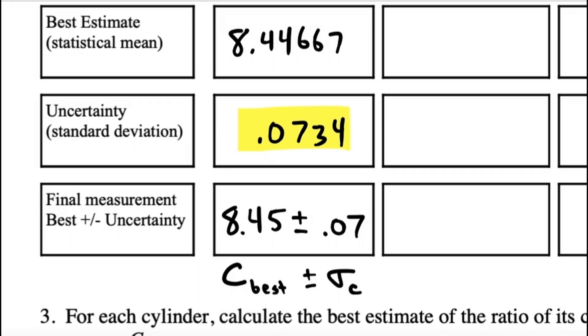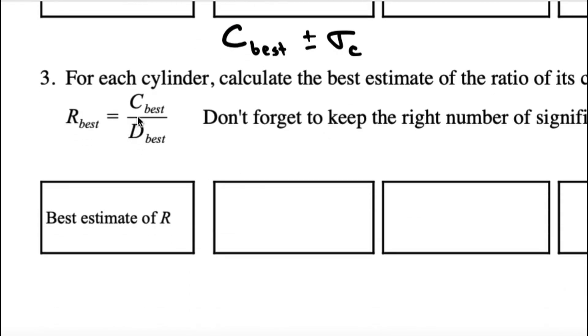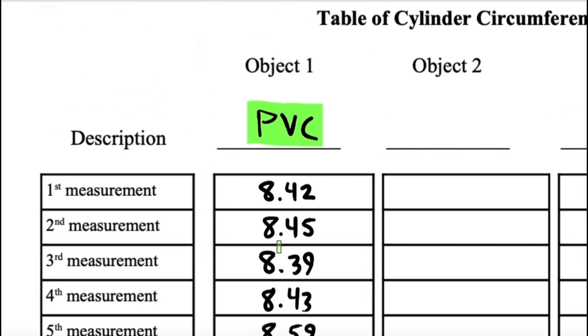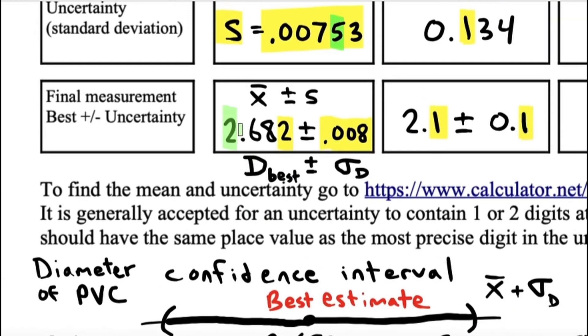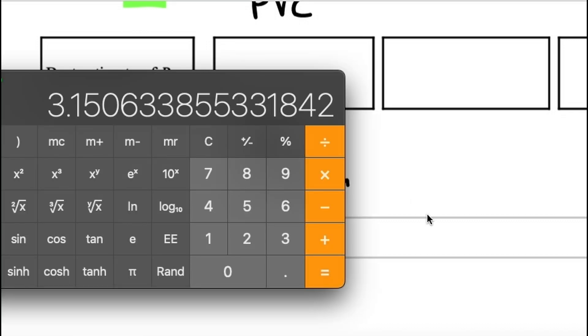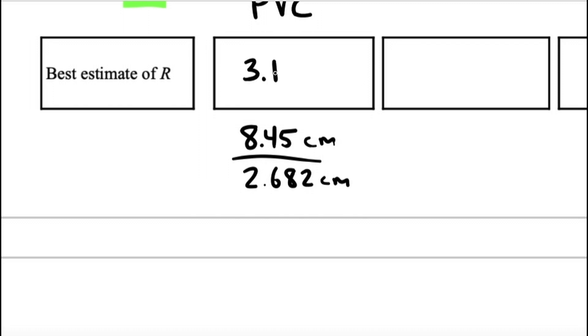Because it's going to give you some formulas to plug into. First formula is simply dividing your best circumference by your best diameter for each object. So this could be for the PVC. I'll do 8.45, which is the best circumference, divided by 2.682, which is the best diameter.